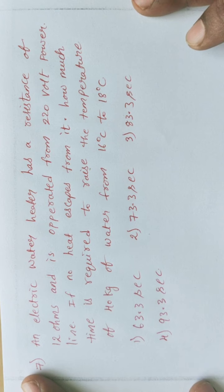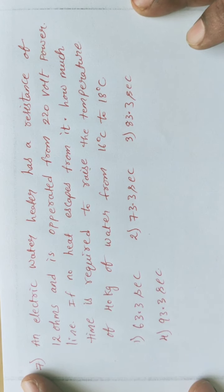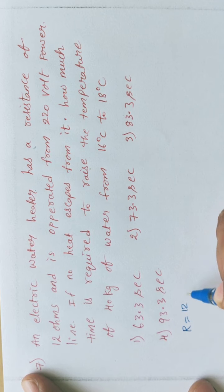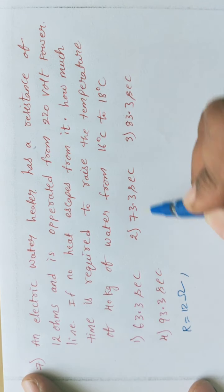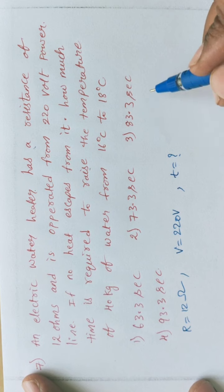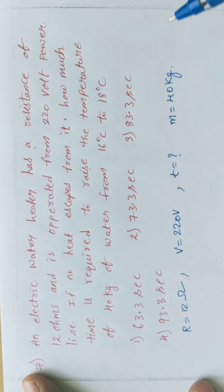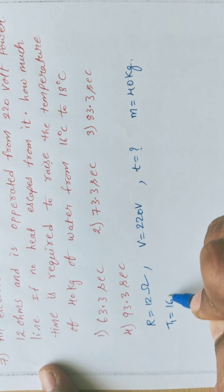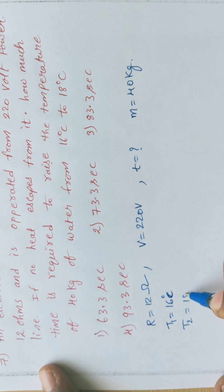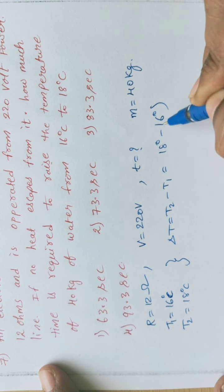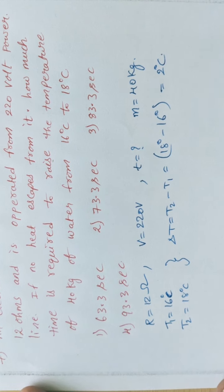Problem 4. An electric water heater has resistance R equal to 12 ohms and is operated from V equal to 220 volts. The time required to raise temperature of m equal to 40 kg of water from 16 degrees C to 18 degrees C is to be found. Delta T equals T2 minus T1 equals 18 minus 16 equals 2 degrees C.